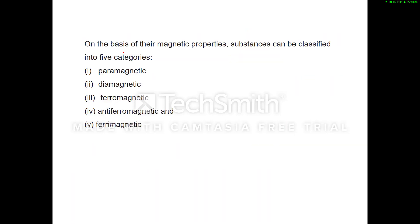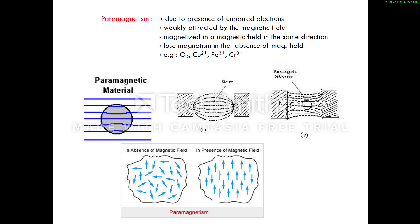On the basis of magnetic properties, substances can be classified into five categories: paramagnetic, diamagnetic, ferromagnetic, anti-ferromagnetic, and ferrimagnetic substances. First, paramagnetic substances — these show paramagnetism due to the presence of unpaired electrons. If any substance is paramagnetic in nature, it means it has one or more unpaired electrons. These substances are weakly attracted by the magnetic field.